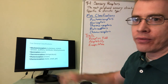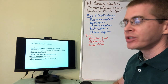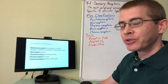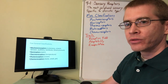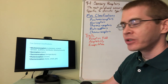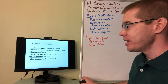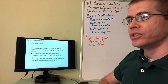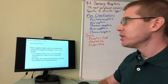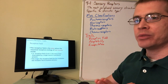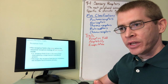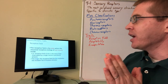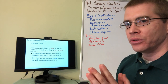Here are the five main classifications of sensory receptors: mechanoreceptors, nociceptors, thermoreceptors, photoreceptors, and chemoreceptors. Before we get into those individual classifications, let's talk about some traits that all of these sensory receptors share. The first is the concept of the receptive field.